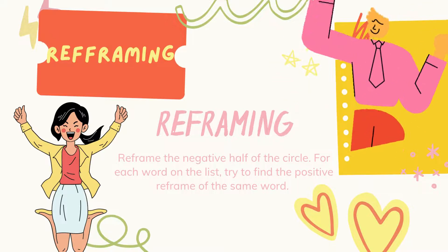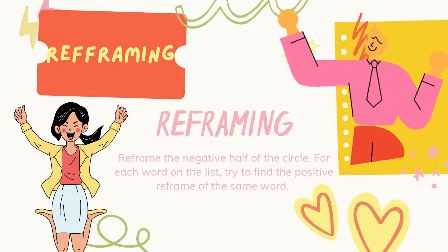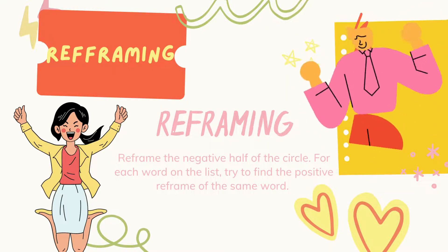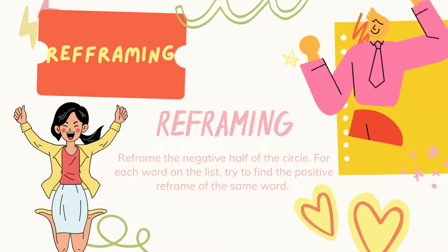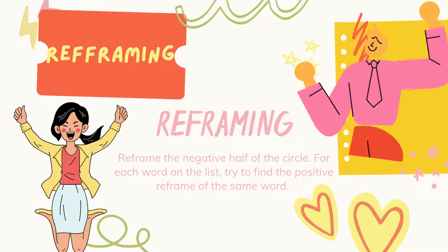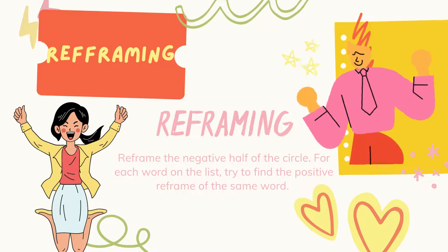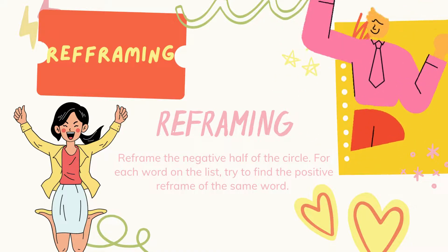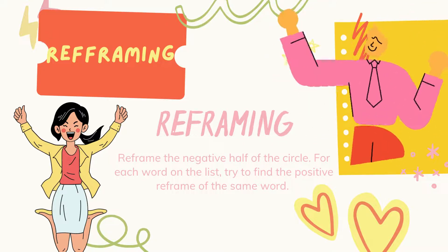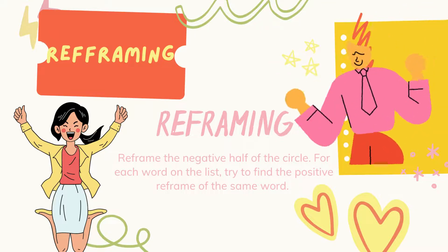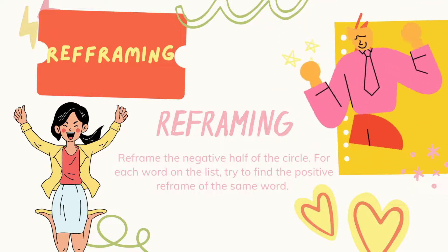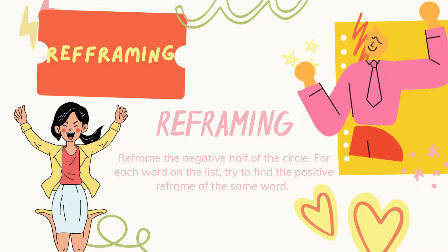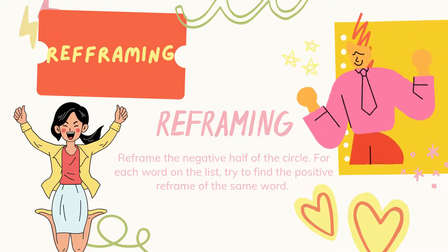We are going to have the reframing. Try natin baliktarin lahat ng mga sinabi niyong positive and negative. Sa activity na ito, itry natin i-reframe lahat ng mga negative na sinabi mo sa sarili mo. I-reframe natin yung opposite ng sinabi mong negative. You are going to reframe the negative half of the circle for each word on the list, isa-isa yun. Kung ang sinulat mo ay sampung negative words and phrases, ibig sabihin sampu din ang i-re-reframe mo at i-re-rephrase mo into something positive.